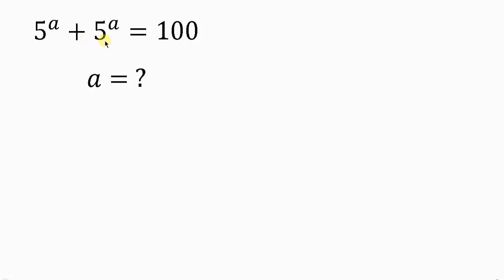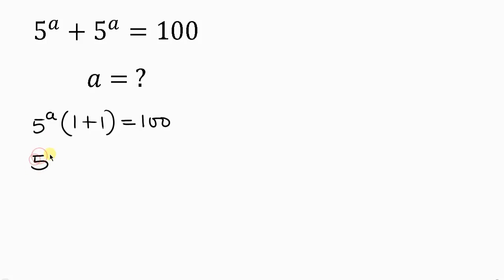Notice that on the left hand side, 5 to the power of a is common, which means we can factor out 5 to the power of a and open brackets. So 5 to the power of a divided by 5 to the power of a is 1, plus 5 to the power of a divided by 5 to the power of a is 1, and this is equal to 100. Simplifying further, we have 5 to the power of a times 2, equal to 100.